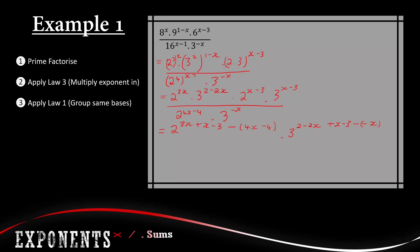Now we simplify. For base 2: 4x minus 4x is zero, minus 3 plus 4 gives 1, so we have 2 to the power of 1. For base 3: minus 2x plus x is negative x, then minus negative x becomes plus x, giving zero, and 2 minus 3 is negative 1, so 3 to the power of negative 1. To make the exponent positive we take the base down: 2 to the power of 1 times 1 over 3, which gives a final answer of 2 over 3.